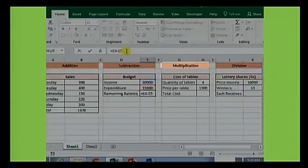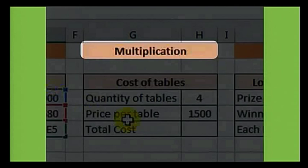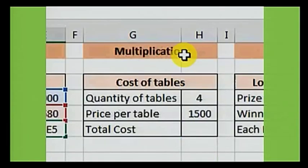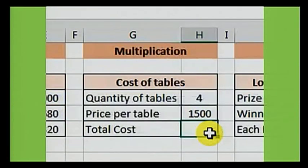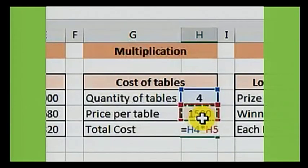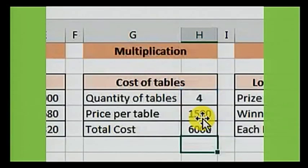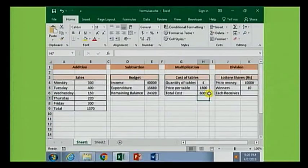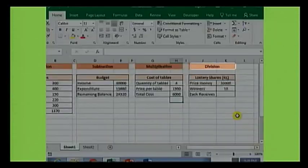Moving along to the multiplication example. To begin, press the equal key, then click on the quantity. Press the multiply key on the keyboard, click on the price per table, and press the enter key. Now we get 6000 as the result.